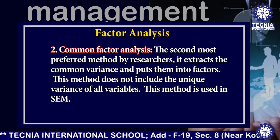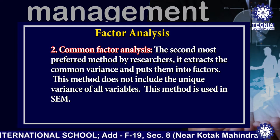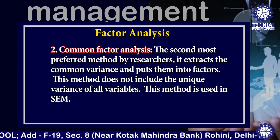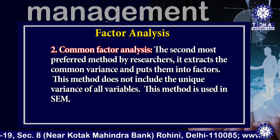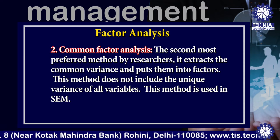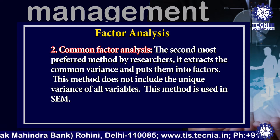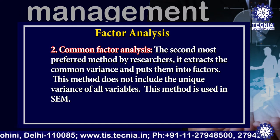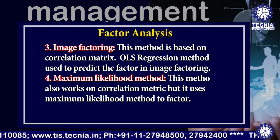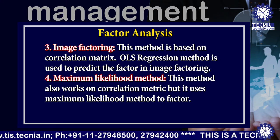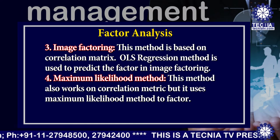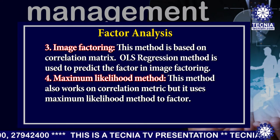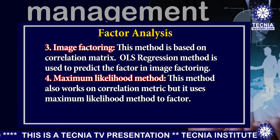The second one is common factor analysis — the second most preferred method by researchers. It extracts the common variance and puts them into a factor. This method does not include the unique variance of all variables and is used in SEM. The third one is image factoring, which is based on a correlation matrix. OLS regression method is used to predict the factor in image factoring.